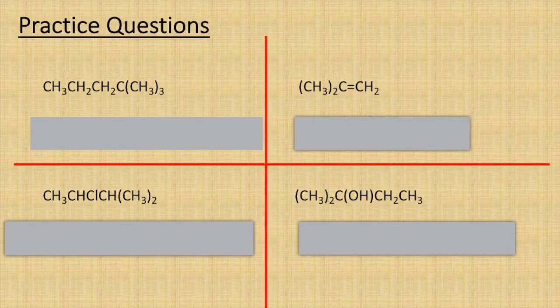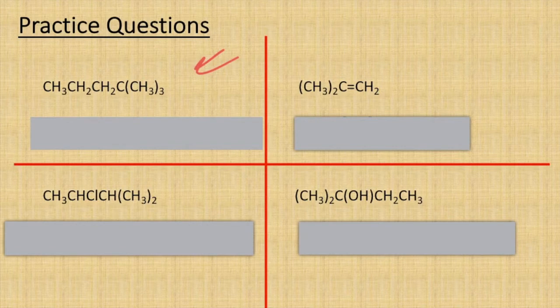So let's go through the answers. For page one we're going to start off with our alkane here, but we do have a branch coming off of that, so our longest chain is going to be five carbons.